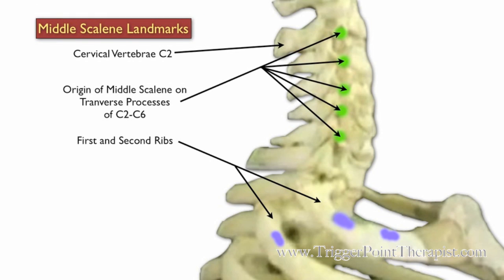Here are the landmarks for the middle scalene. Again we have the cervical vertebrae and the first and second ribs. The middle scalene originates on the transverse processes of C2 through C6, and inserts just behind the anterior scalene on the first rib.